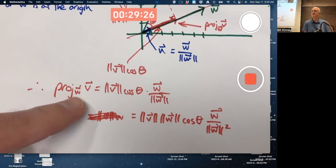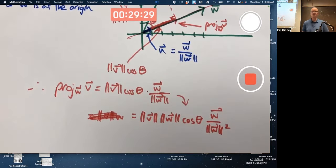Just a little algebra trickery, going from here to here, I just multiplied by the fraction, magnitude of W divided by the magnitude of W, which is one. So, it doesn't change the value of this expression.